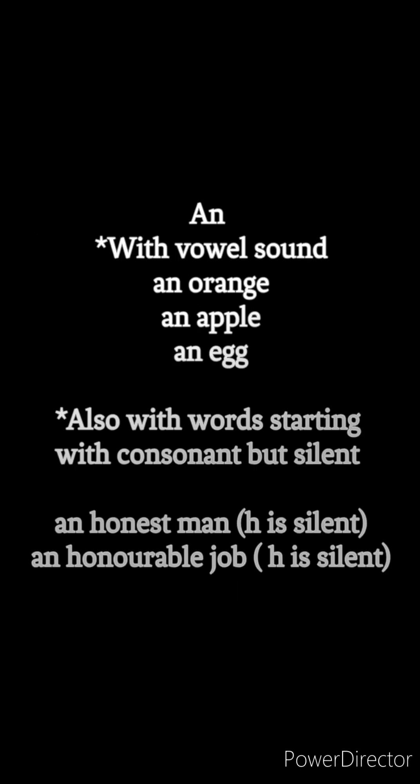'An' is used before words where the first letter starts with a vowel sound. It is also used with words starting with a consonant letter but remaining silent. For example: an orange, an apple, an egg, an honest man, an honorable job, an heir of the property.